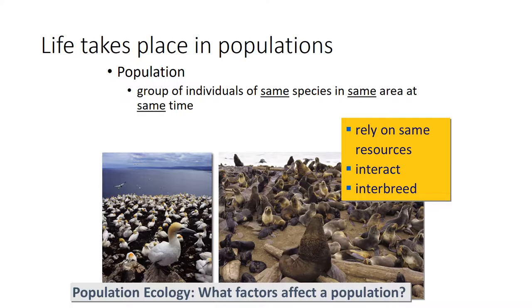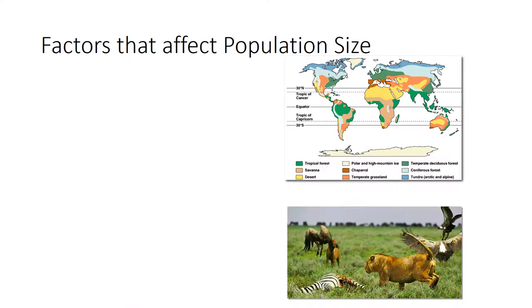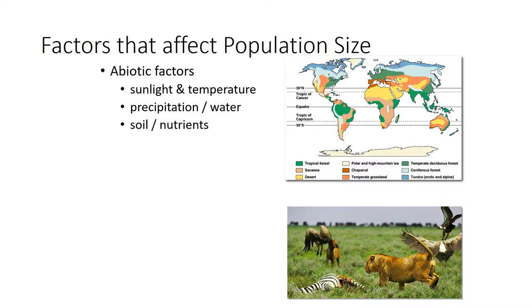When we think about population ecology, a population ecologist focuses on what factors affect a particular population. Some of those factors are abiotic: the amount of sunlight, which gives rise to temperature, the amount of rainfall in the form of precipitation — which could come as snow — and the soil and nutrients available. Those are all abiotic factors that affect the distribution of populations. That's the reason why we have tropical species, desert species, savanna species, and so on.